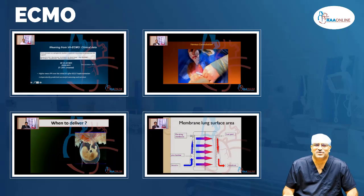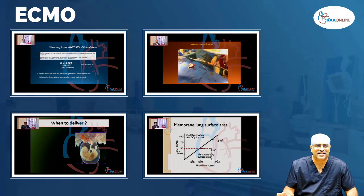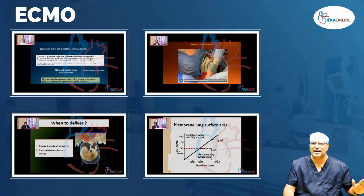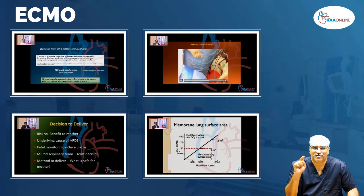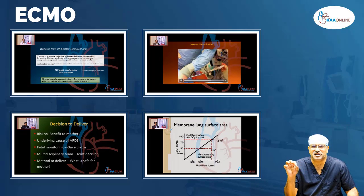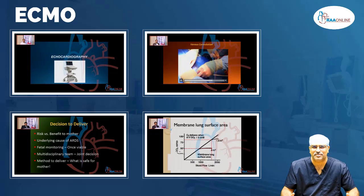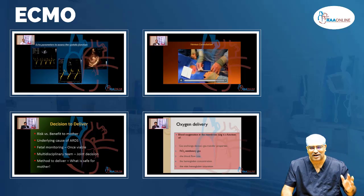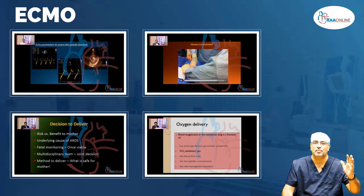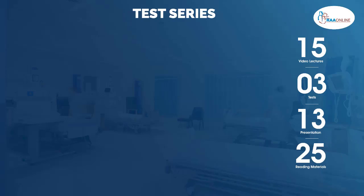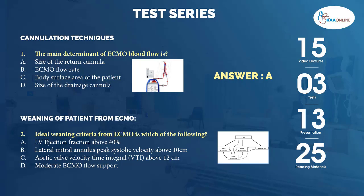Now coming to ECMO. The use of extracorporeal membrane oxygenation has been exponentially increasing over the last decade and is now considered a mainstream life-saving treatment modality in critical care medicine. However, the need for physician education, training, and experience remains imperative. Although ECMO has been traditionally used in end-stage lung disease and circulatory collapse, it is being adopted for use in right heart failure as a bridge to heart and lung transplant, and as rescue therapy for both sepsis and post-organ transplantation. This ECMO module has about 15 video lectures, 3 tests, 13 presentations, and 25 reading materials.